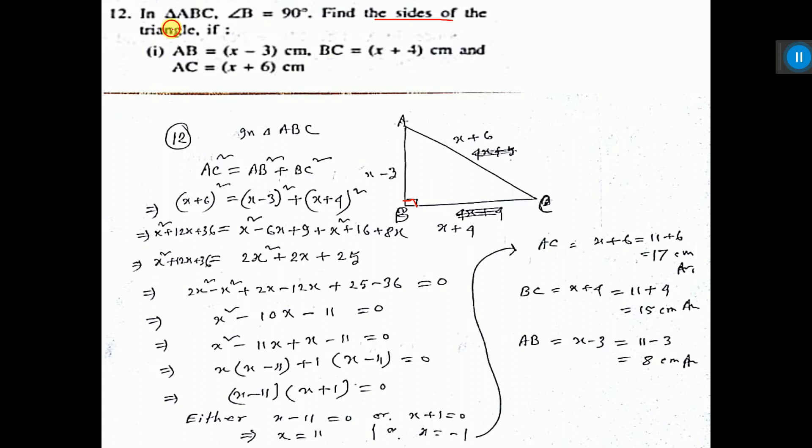For the sides of the triangle here, AB is equal to x minus 3. So I have written here x minus 3. BC is x plus 4. So BC x plus 4. And AC value x plus 6, that I have written here.